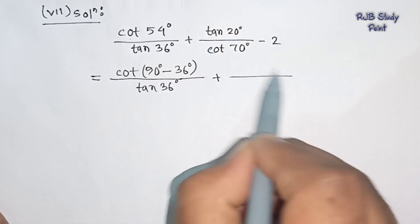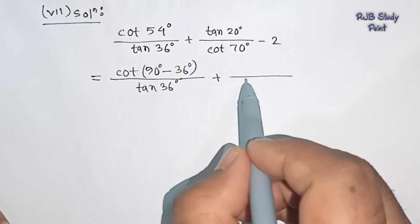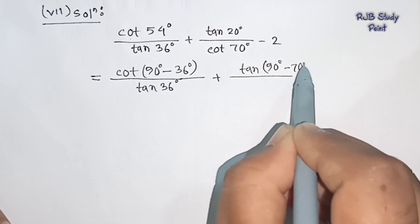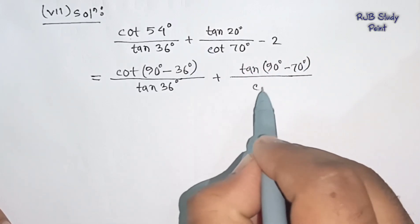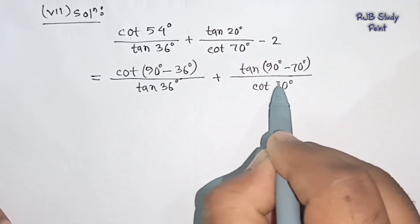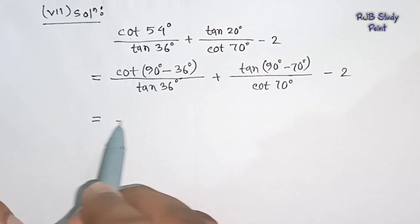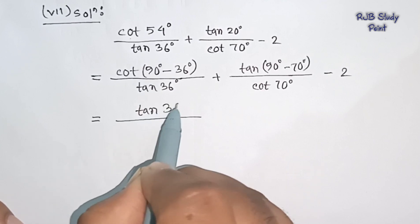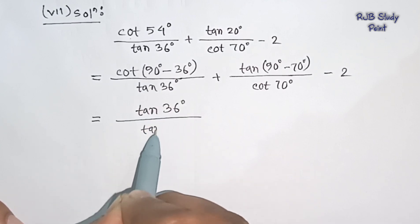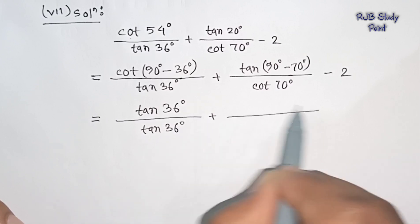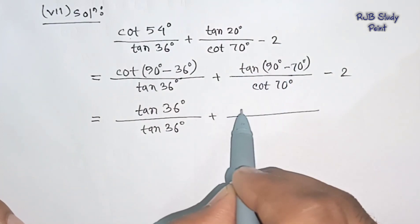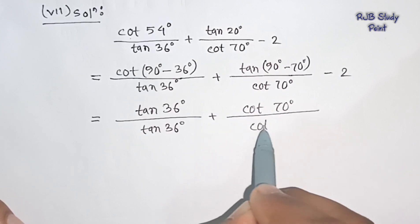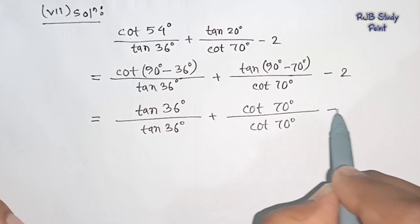Applying the identity: cot(90 degree minus A) equals tan A. So cot 54 degree over tan 36 degree becomes tan 36 degree over tan 36 degree, which is 1. And tan(90 degree minus A) equals cot A, so tan 20 degree over cot 70 degree becomes cot 70 degree over cot 70 degree, which is also 1. Then 1 plus 1 minus 2.